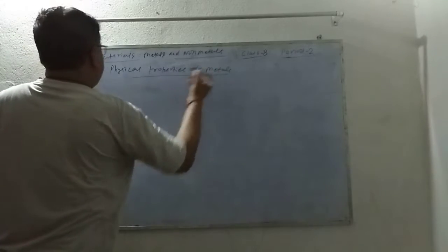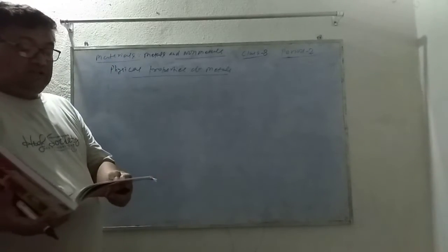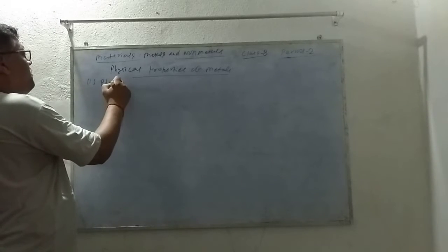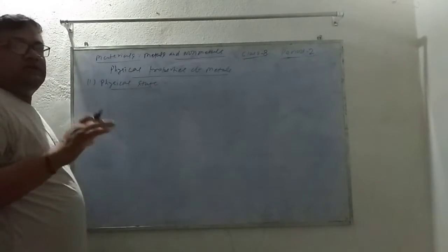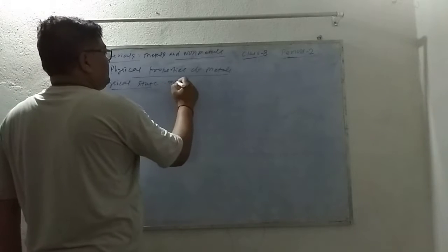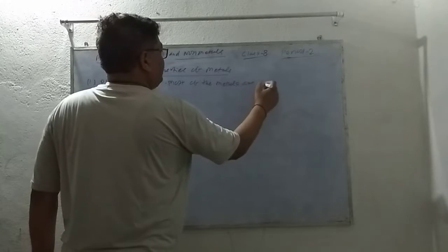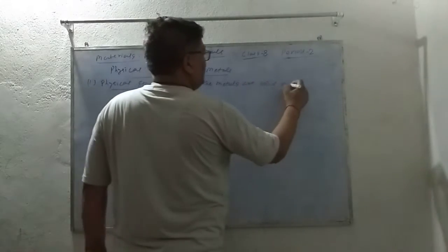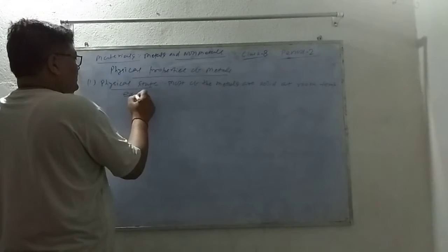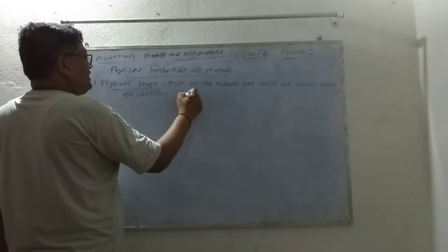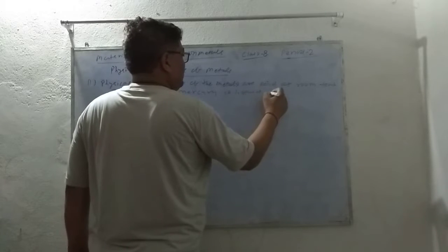What are the physical properties of metals? The first thing is called physical state. Most of the metals are solid at room temperature. Is there an exception? The exception is mercury. Mercury is liquid at room temperature.